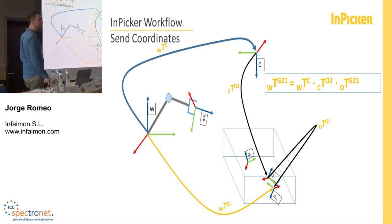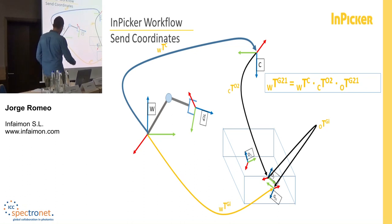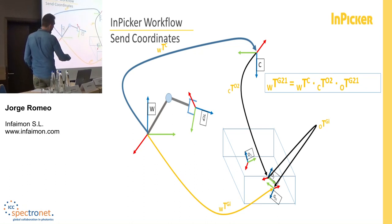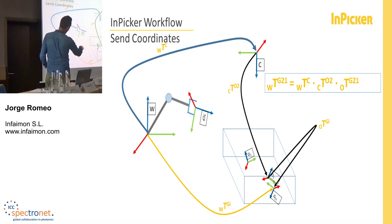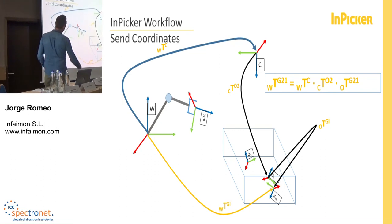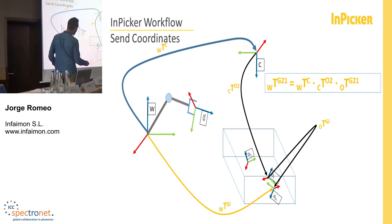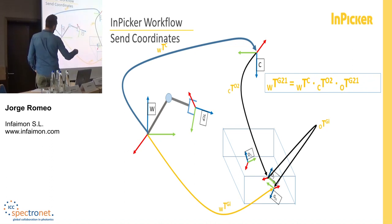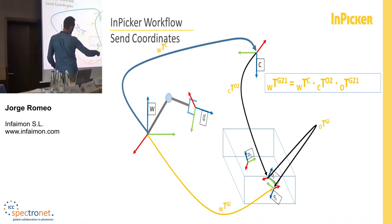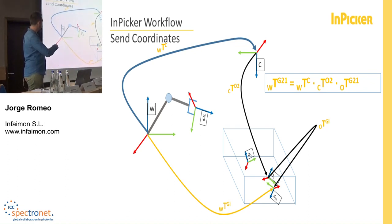The last step is to send the coordinates to the robot. We send the robot the transformation representing the position of the grasping point with respect to the robot reference, so the robot can align the TCP with the grasping point of the object. To do this, we have the transformation defining the location of the camera with respect to the world reference — a calibration configured using our graphical interface — combined with the object detection result and the grasping point expressed with respect to the object reference. Using this computation, we send the robot the location so it can move and pick the object.